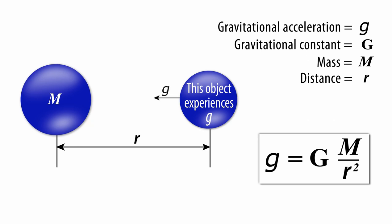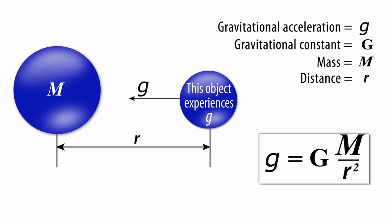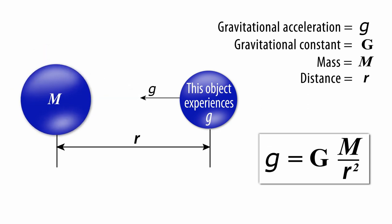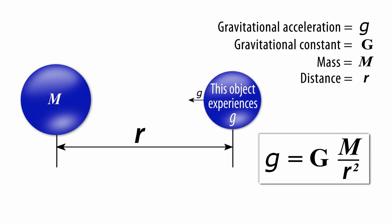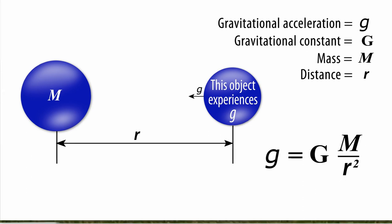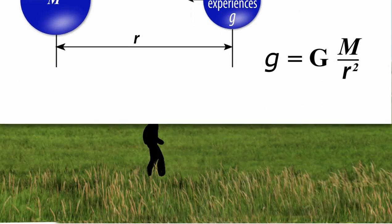First, the law says that a greater mass, M, will cause greater gravitational acceleration, that is, greater g. Second, the law says that small g also depends on R, which is the distance from the mass M. Because R appears in the denominator, a larger R — meaning a greater distance — causes a smaller gravitational acceleration, g. What does this mean for measuring gravity on Earth?